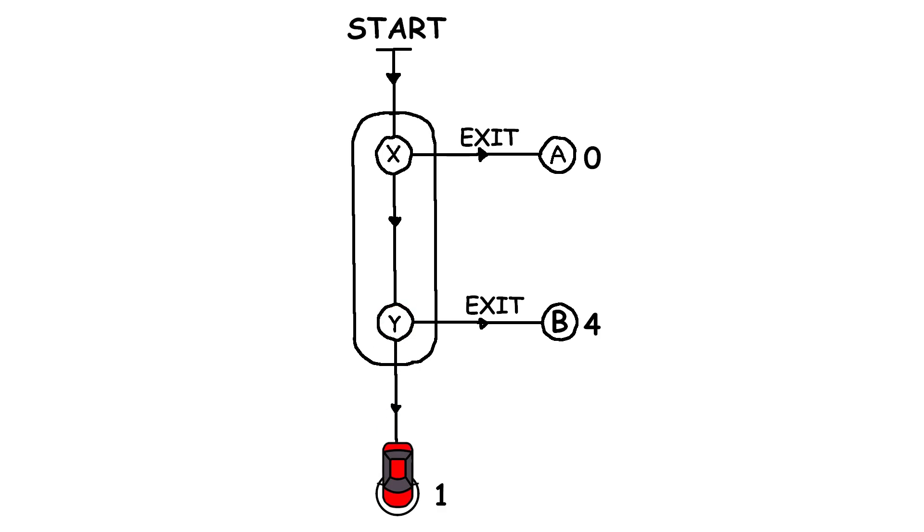The twist is that the driver cannot tell the difference between intersections X and Y, and can't remember if they've already passed one of them before. This lack of distinction makes the decision-making process quite complex.